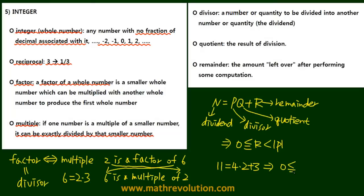The remainder three is bigger than or equal to zero and smaller than the absolute value of four. So remember these vocabularies: the divisor, the dividend, the quotient, and the remainder.